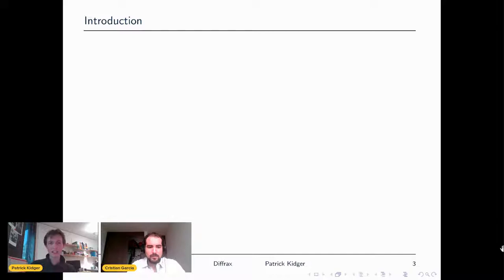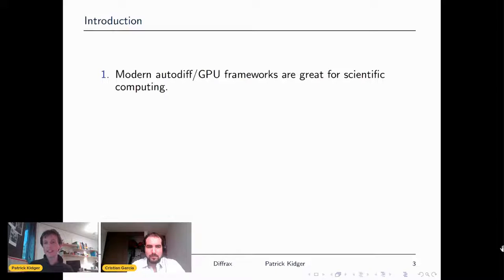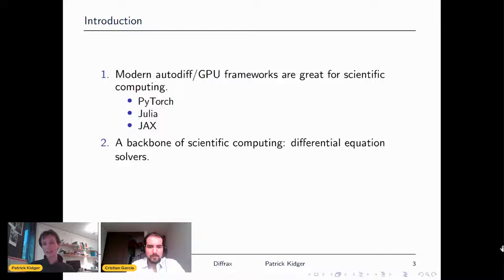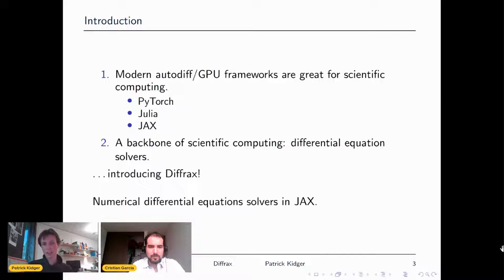Modern auto-differentiation GPU frameworks are amazing, not just for deep learning, but also for scientific computing. We've got things like PyTorch and Julia, but of course also JAX. What is the backbone of any scientific computing framework? That is differential equation solvers. We really need to solve differential equations all the time in the sciences. And so, of course, we have Diffrax — a suite of numerical differential equation solvers in JAX.